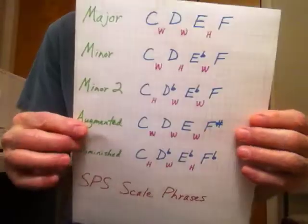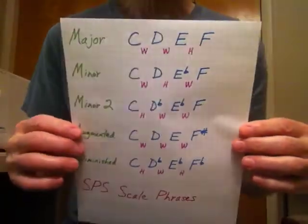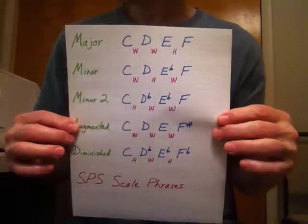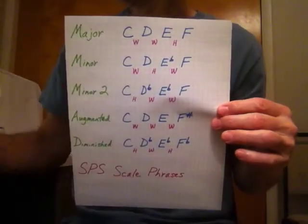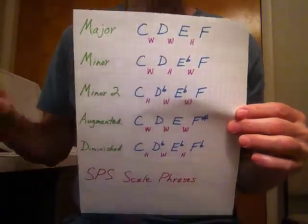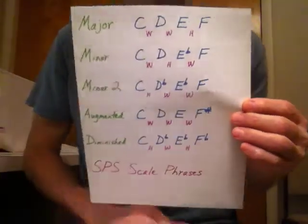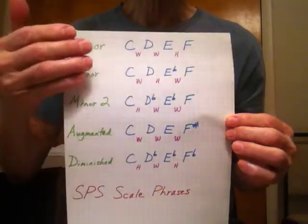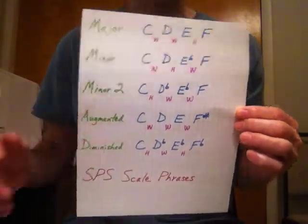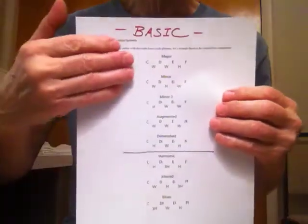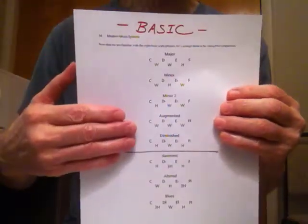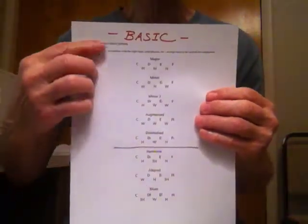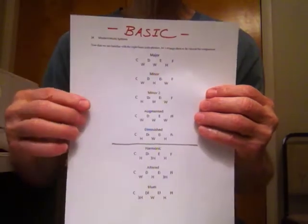I mentioned that only five of my eight basic scale phrases were needed to make the seven traditional modes. These are the five scale phrases that I mentioned — five of eight total basic scale phrases.